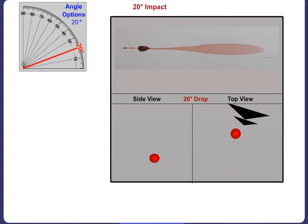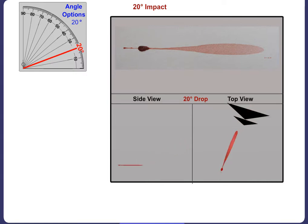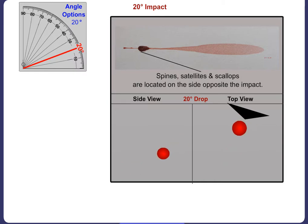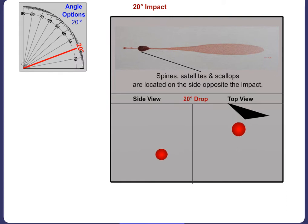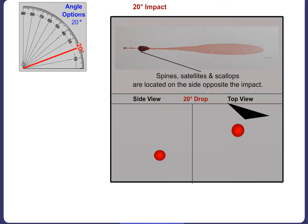A 20 degree angle of impact results in a blood stain that is significantly more elliptical than a stain from a 30 degree angle. The spines, satellite spatter and scallops will be more visible and will continue to focus on the side opposite the angle of impact. Directionality from right to left is clearly evident.